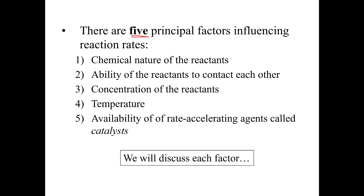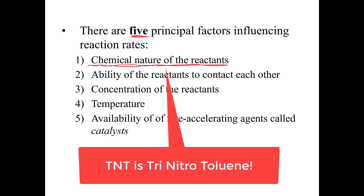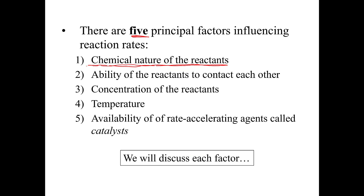It turns out there are five principal factors influencing reaction rates. First, the chemical nature of the reactants — some materials are particularly fast reacting. We know that some materials are explosives, like TNT. Gasoline reacting with oxygen in an internal combustion engine is also a very fast reaction once it is started.